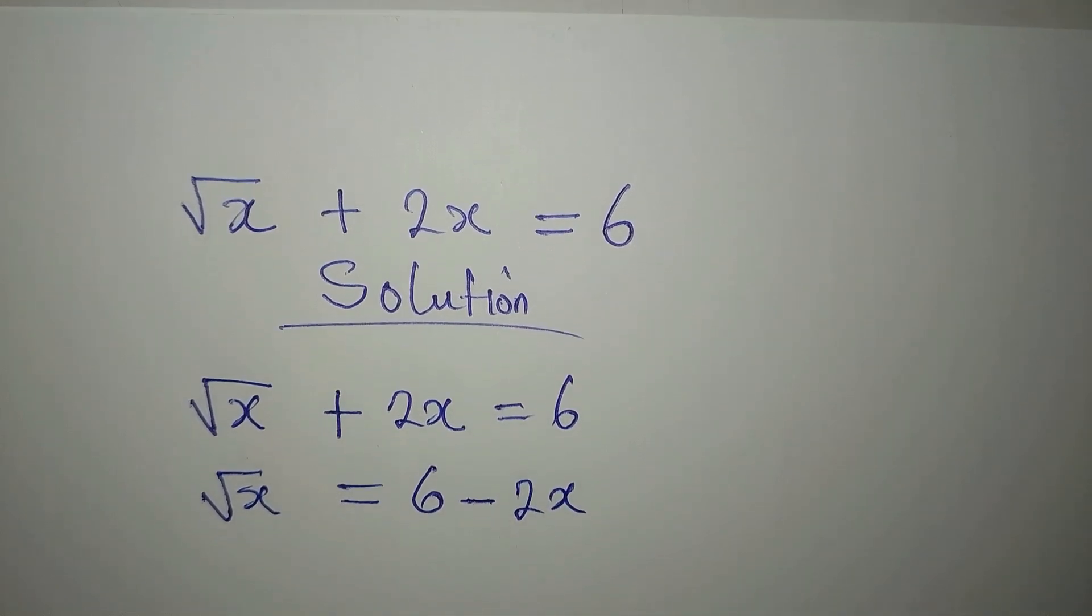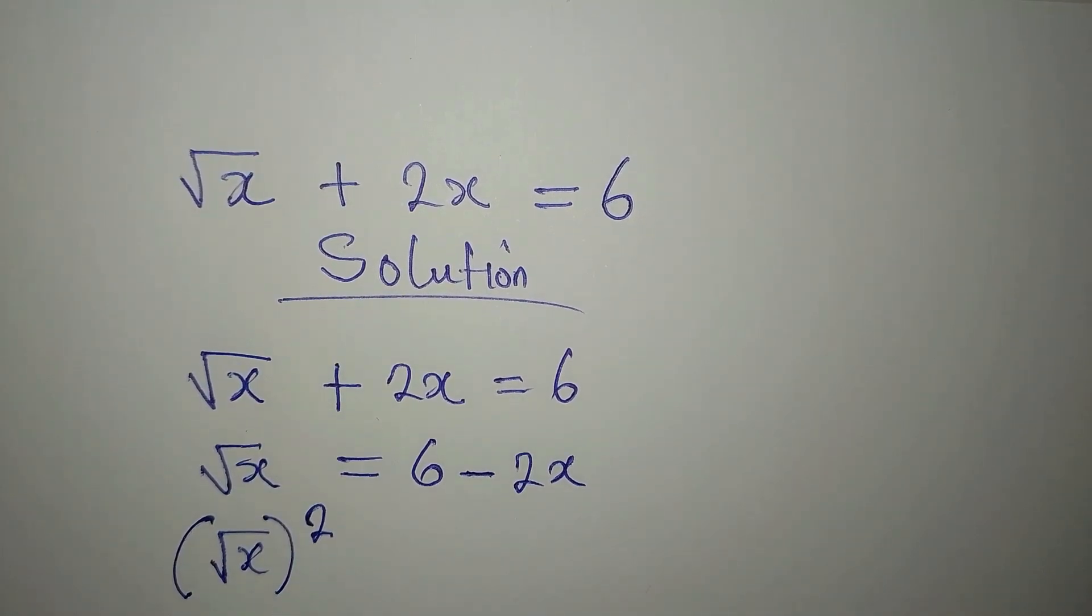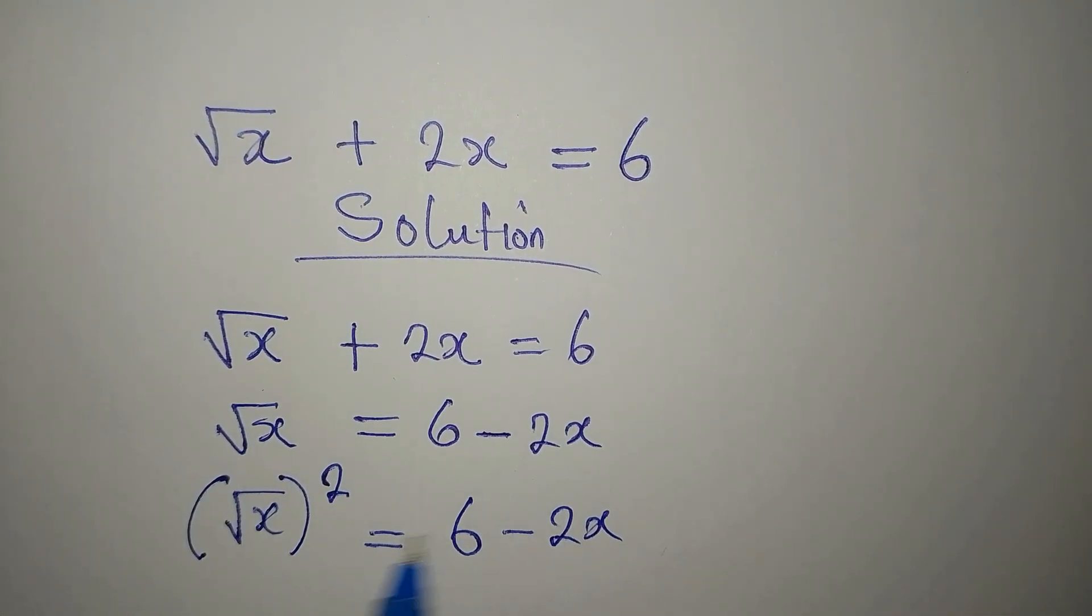Now the next thing on our mind is how to remove the square root. And we can only remove the square root by squaring what we have. So we have 6 minus 2x. Now you can see that we have changed the equation as we squared what we have here. So to make the equation the same, you will also square what you have on the other side.